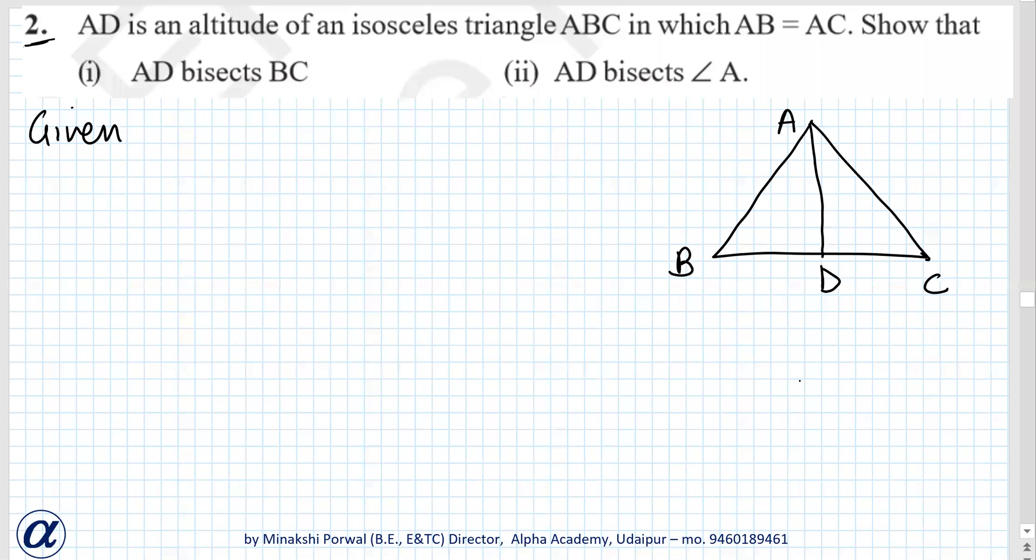AD is an altitude of isosceles triangle ABC in which AB equals AC. Show that AD bisects BC and AD bisects angle A.